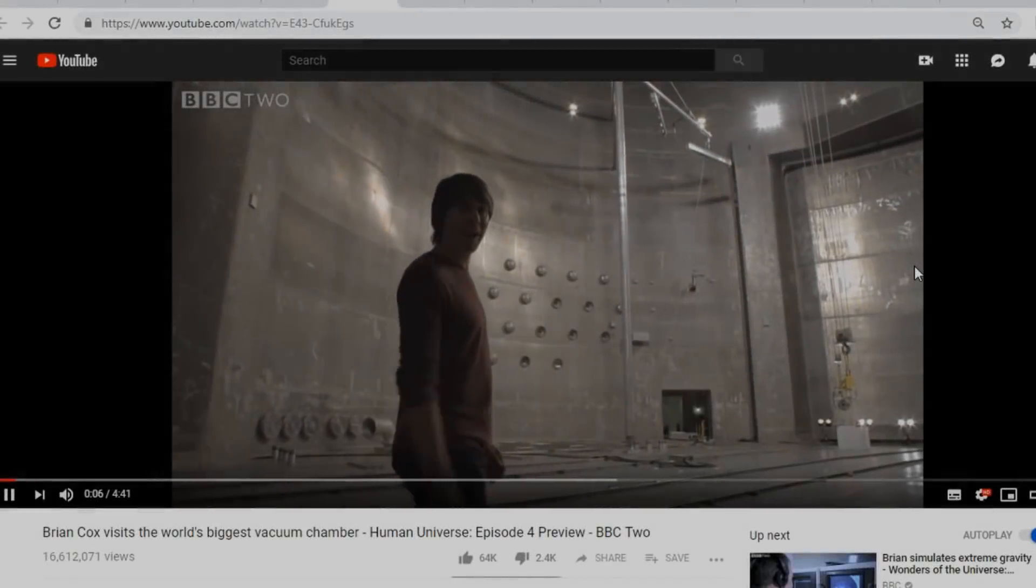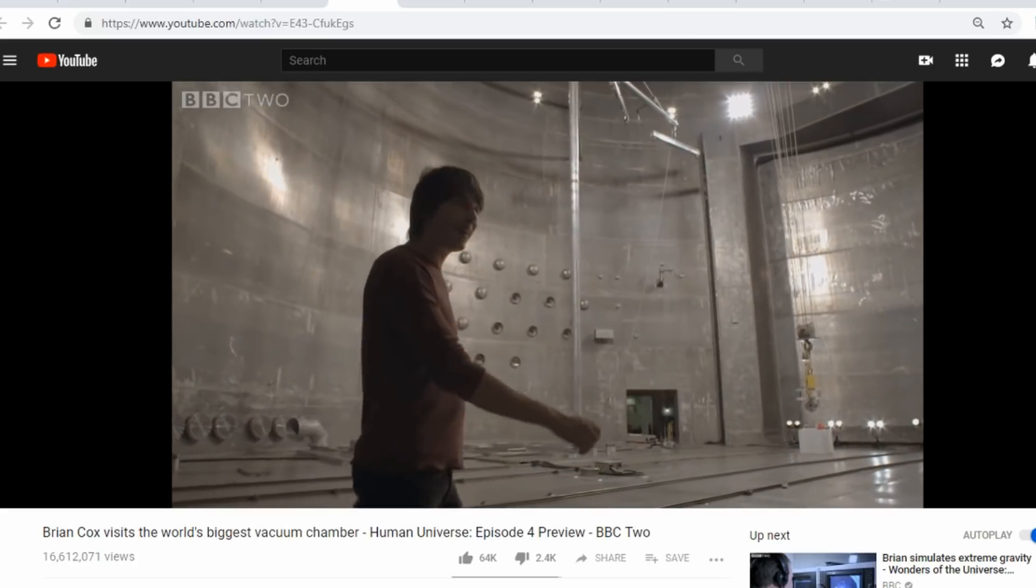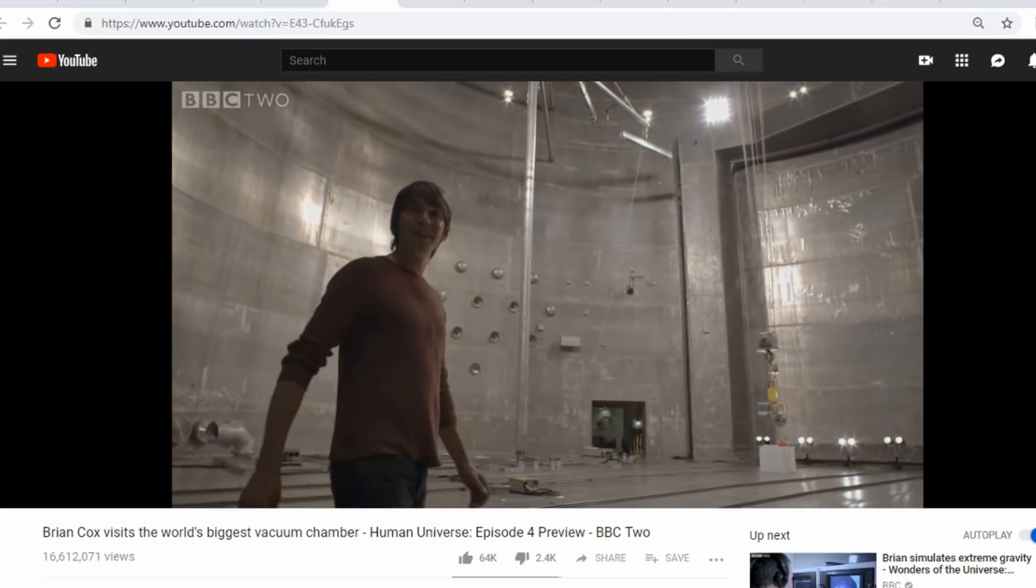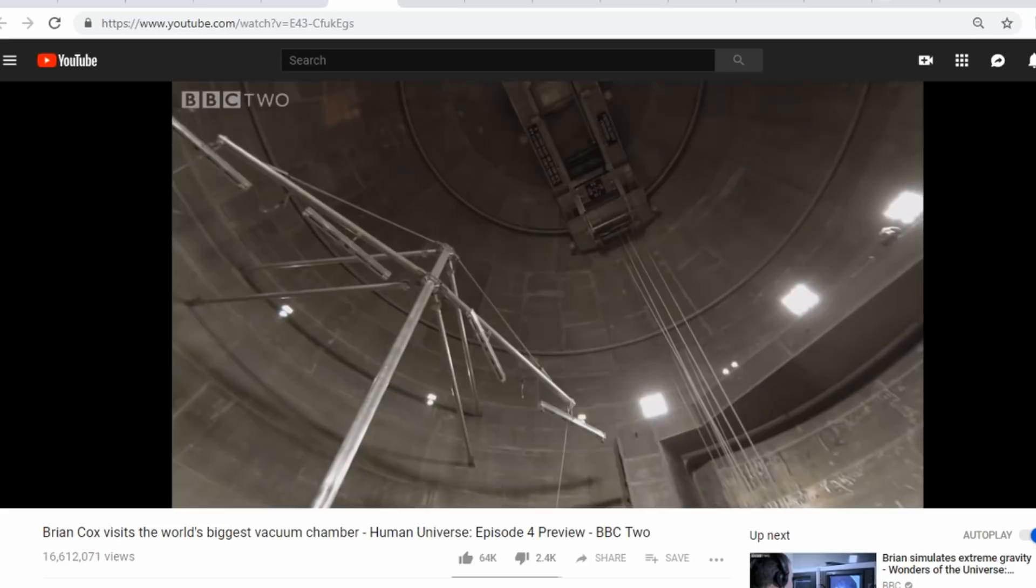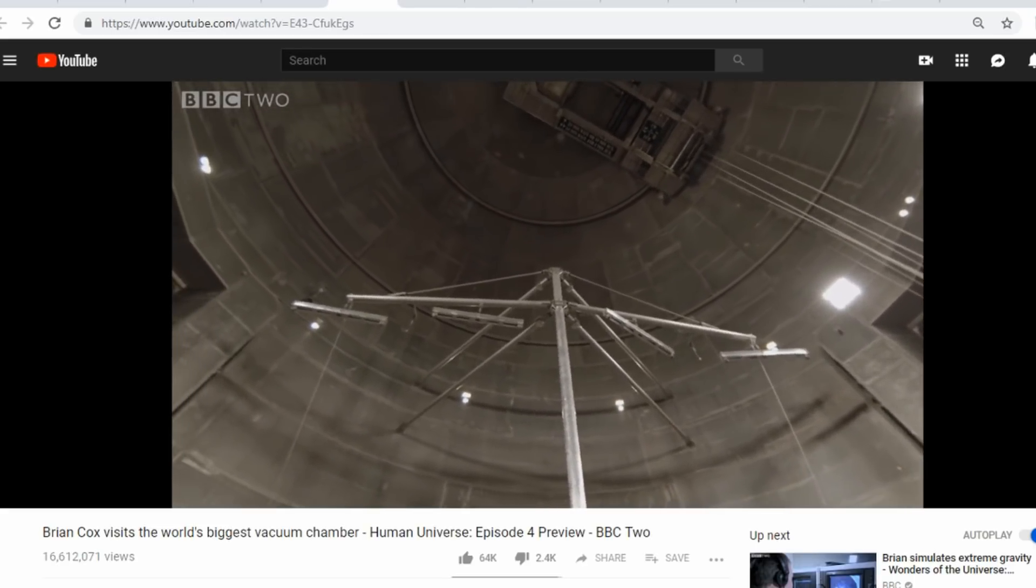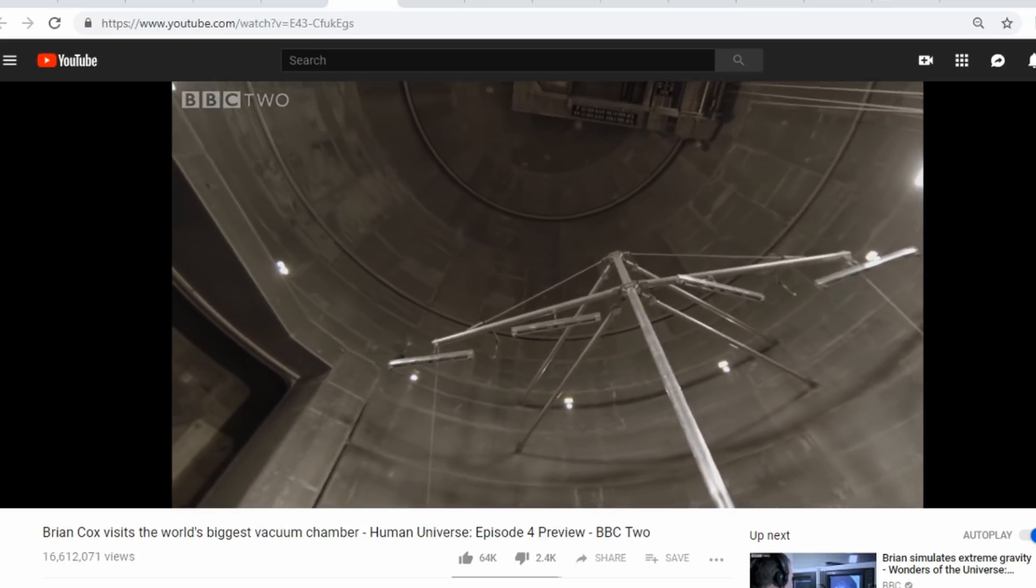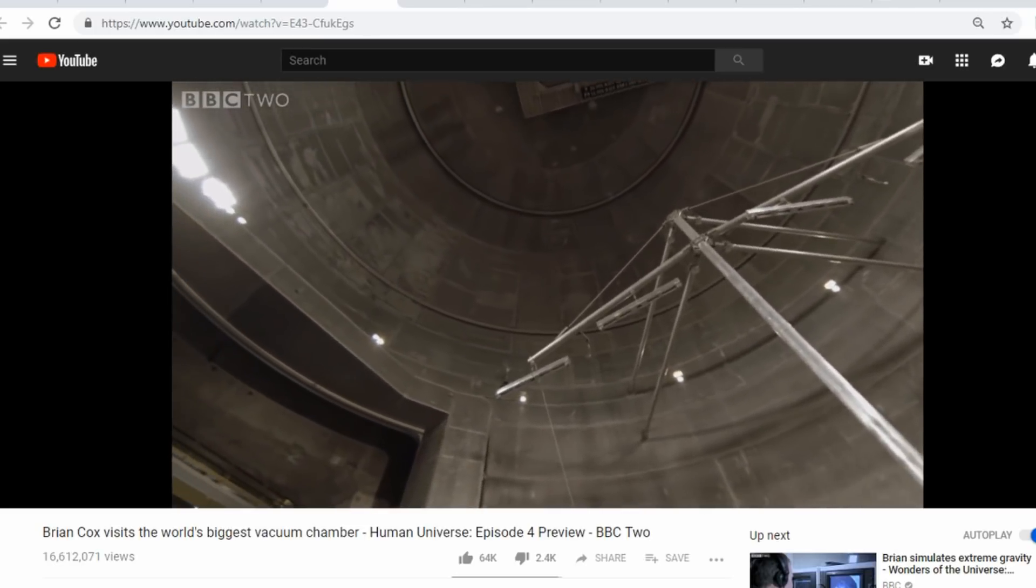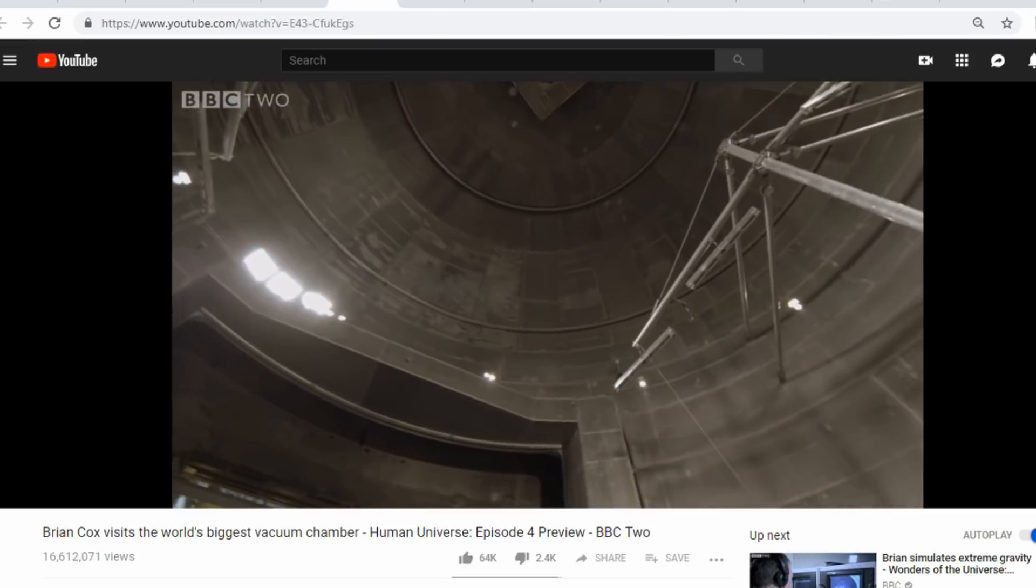This is NASA's space power facility near Cleveland, Ohio, and it is the world's biggest vacuum chamber. It's used to test spacecraft in the conditions of outer space, and it does that by pumping out the 30 tons of air in this chamber until there are about two grams left.